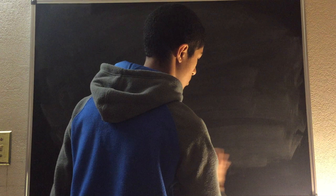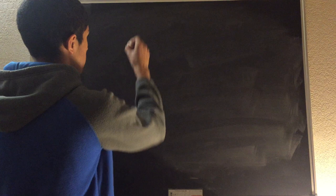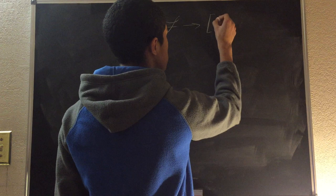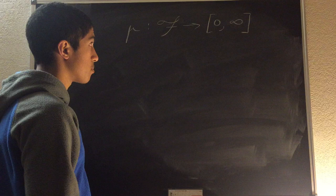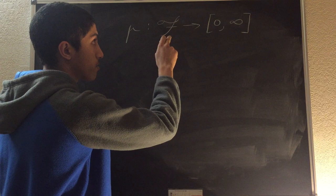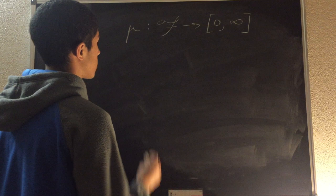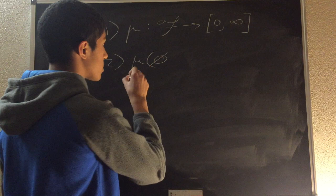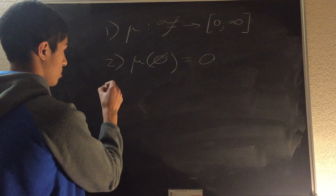So now we will discuss measures on a sigma-algebra. A measure mu goes from the sigma-algebra F to zero to infinity. This is very similar to the first property in our previous video, where mu was a function from the power set of reals to zero to infinity — now it's simply from a sigma-algebra to zero to infinity. This is our first property. Our second property is that the measure of the null set, or the empty set, will always be zero.